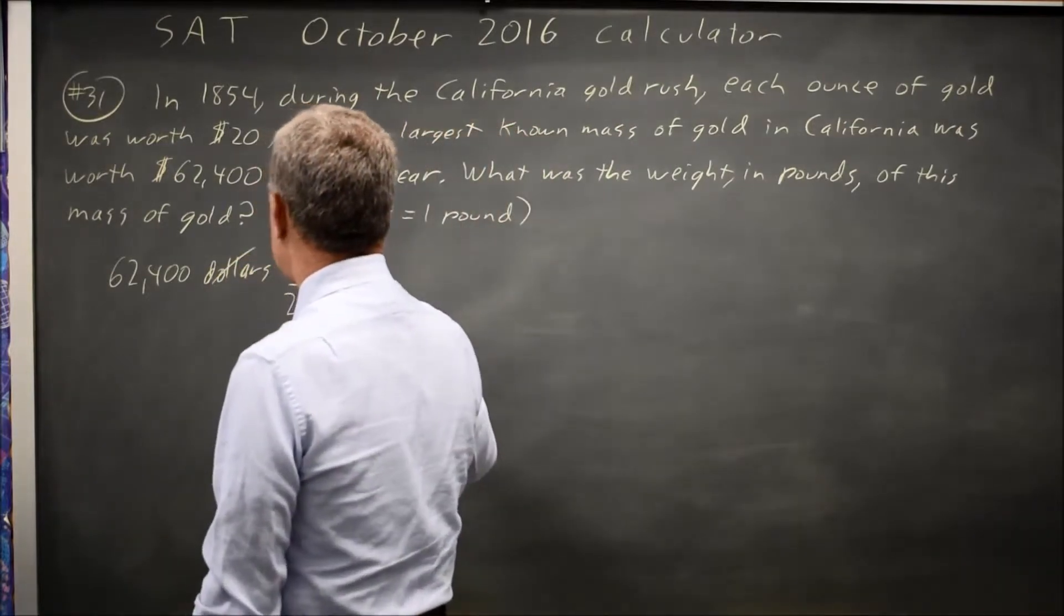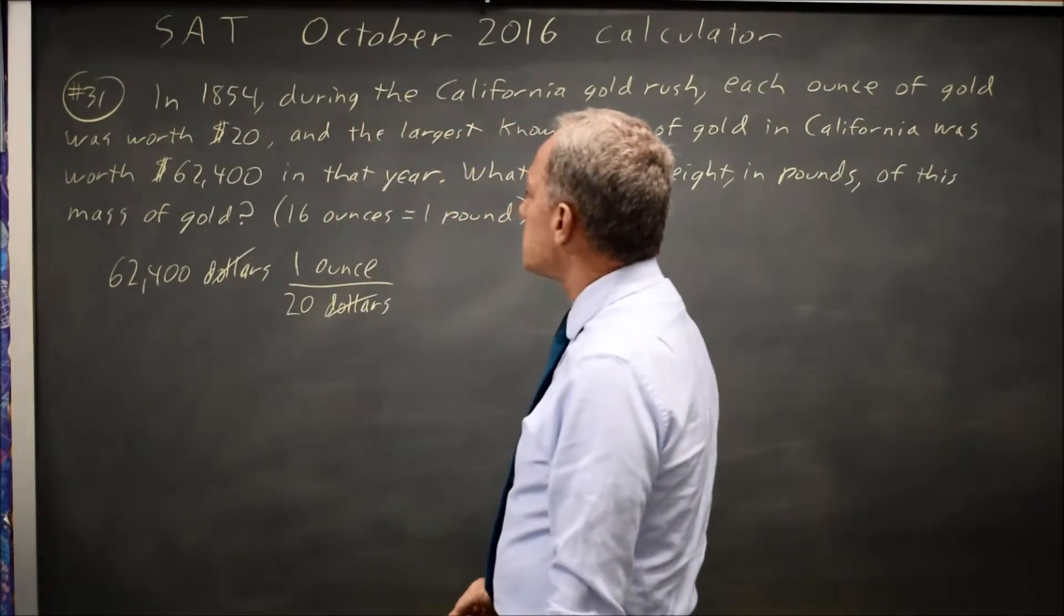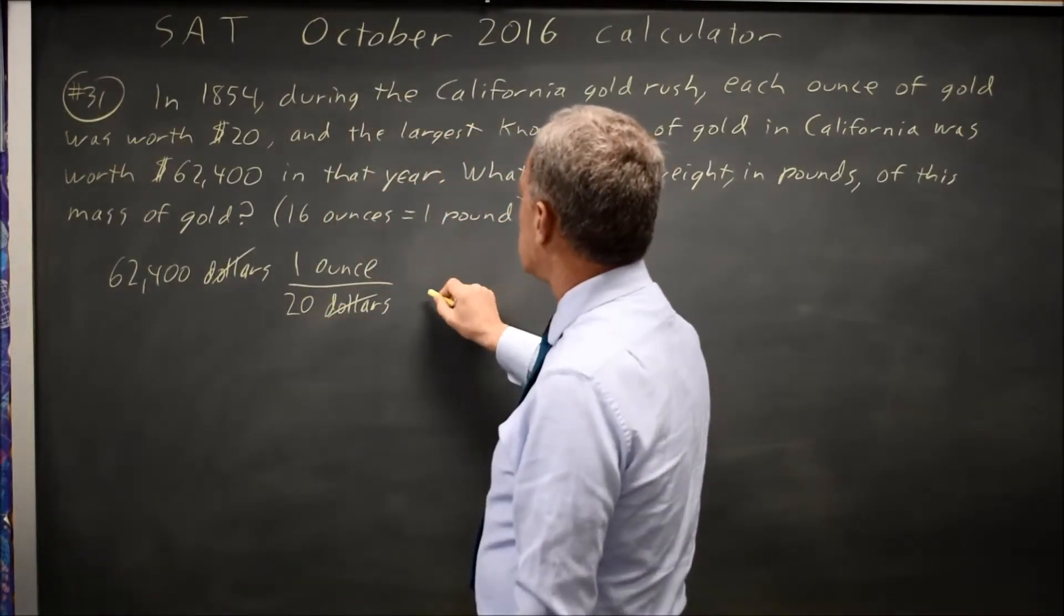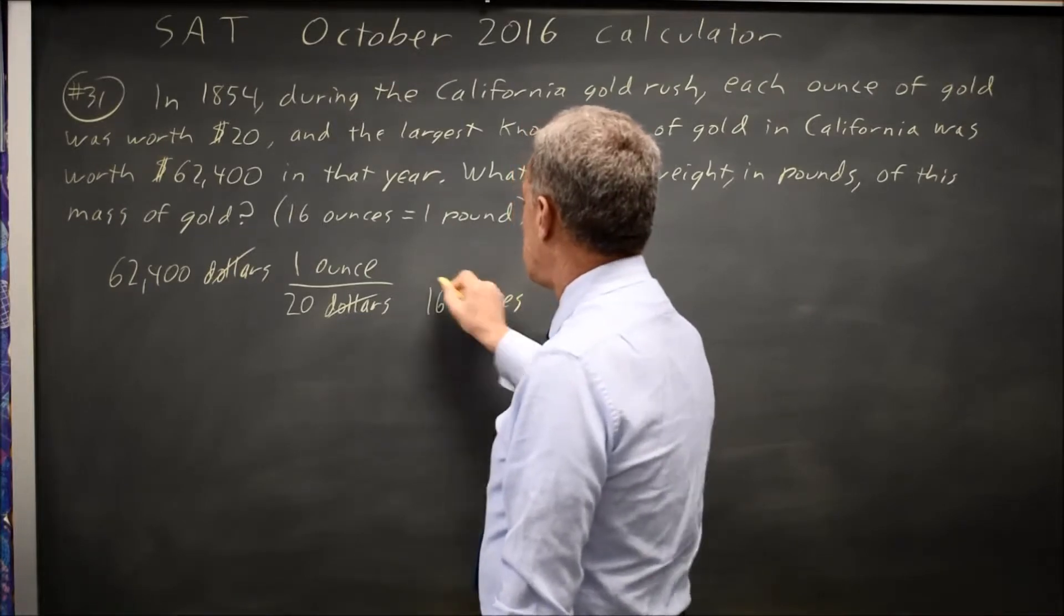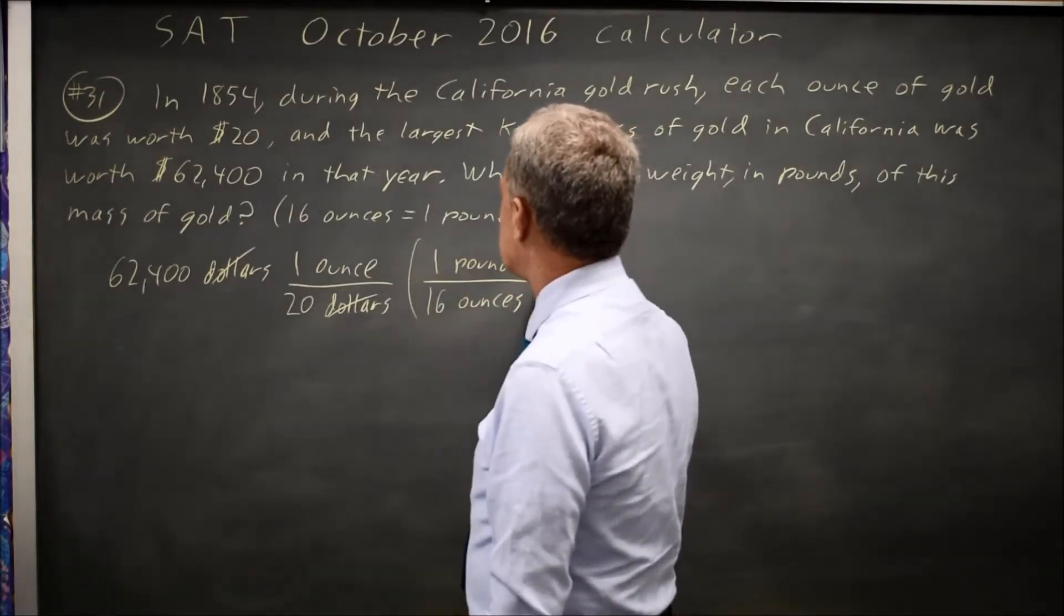So dollars over dollars cancels, and now I have ounces: 62,400 over 20. But I want pounds. There are 16 ounces in one pound, so this fraction is also 1.